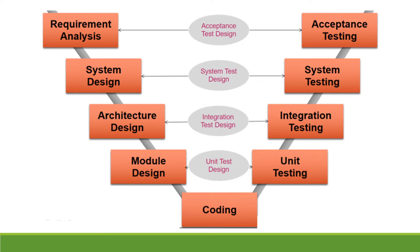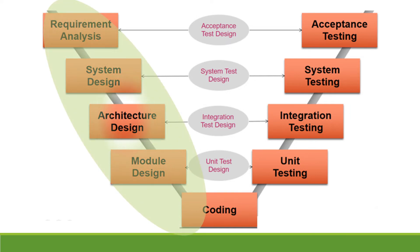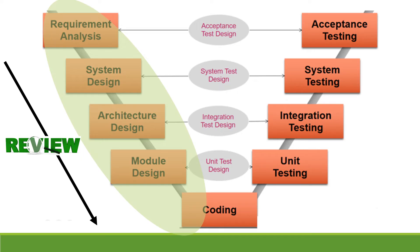If you try to observe the left side of the model, here we have work products like requirements, architecture, design, and code. Can you guess what is the way to identify any issue in these work products? It is by doing review. Review is a static activity — no code execution is needed. We have various types of reviews like requirement review, design review, and code review. By reviewing these work products, we are verifying the procedure — meaning whether the procedure adopted to achieve certain results is correct or not.